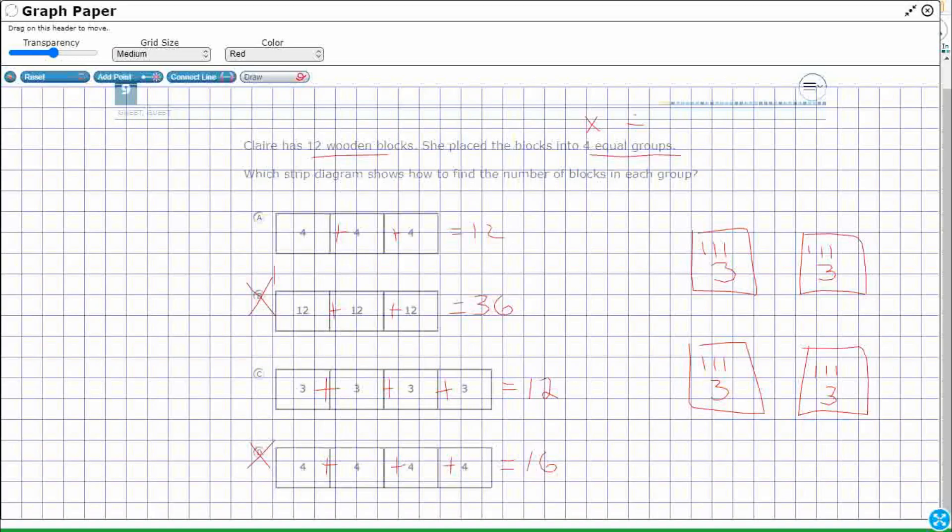If you wanted to kind of finish out the strip diagram, you would put the total up here. These two are going to be your problem, B and D. So let's go back to it because I've got 4s and 3s and A and C both make 12.